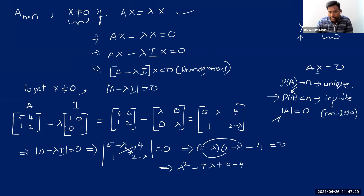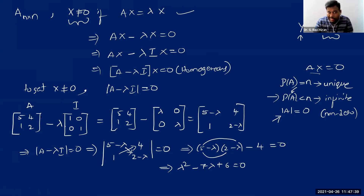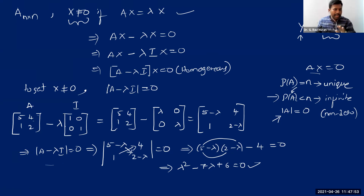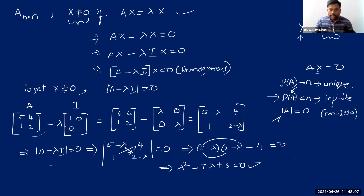This quadratic — called the characteristic equation — came from a second-order matrix. Similarly, a third-order matrix gives a cubic equation. Whatever algebraic equation results from setting the determinant of A minus lambda I to zero is called the characteristic equation, sometimes also called the eigen equation.